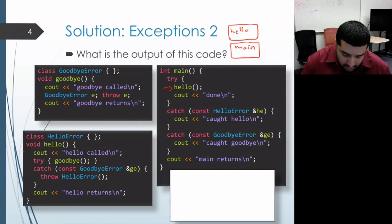And then execution proceeds to the body of the hello function. So that prints out hello called. And then execution continues and it actually enters that try block.